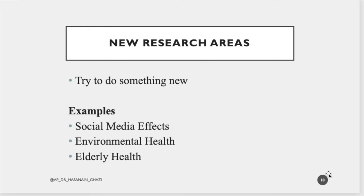Try to do something new. In medical and health research, new areas include social media effects on adolescent health, environmental health, air pollution, climate change, and elderly health. Many countries around the world are getting older — the percentage of those above 65 and 70 years old is growing, and this age group has many challenges. If you choose research topics in these areas, the possibility of getting published is very high.